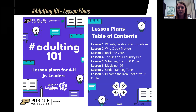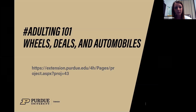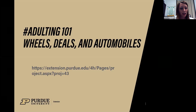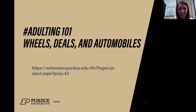That youth-adult partnership — working together to decide what lessons are best for your club — is key. You can also do them right in a row if you want. Let me show you an example of the Wheels, Deals, and Automobiles lesson plan.